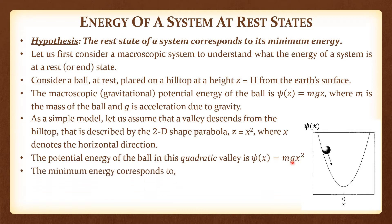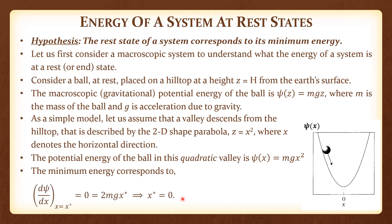To determine the minimum energy, you need to set the first derivative of ψ with respect to x to zero. That gives 2mgx evaluated at x equals x*, set equal to zero. Since m, g, and 2 are all nonzero, x* equals zero. This minimum corresponds to the bottommost position of the valley. Note that at this value the second derivative, which is 2mg, is positive, confirming this is indeed a minimum.